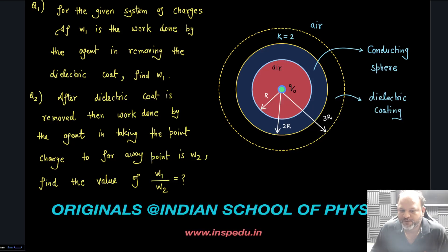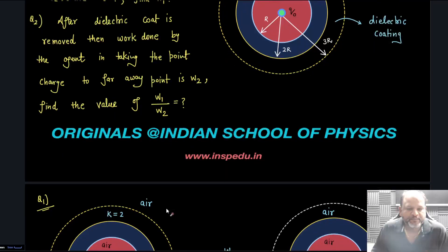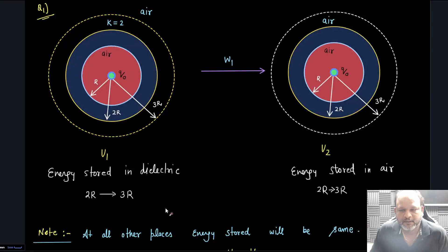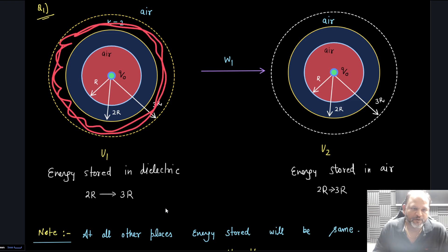This question I am going to solve by two different methods. Once we remove this dielectric coat from here, it will be replaced by air. Whatever change is coming, it is coming in this dielectric part. The work by the agent is going to correspond to the energy difference in this volume.